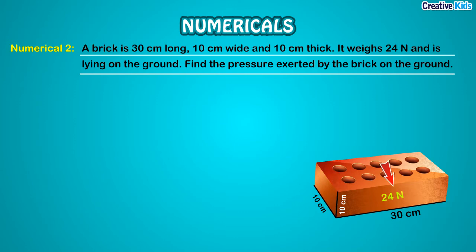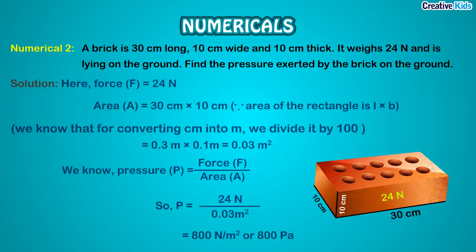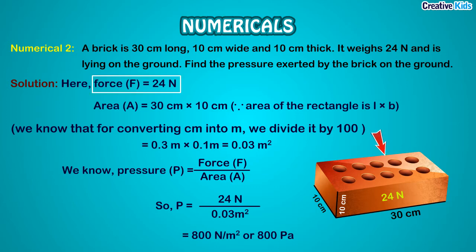The brick weighs 24 N and is lying on the ground. Find the pressure exerted by the brick on the ground. What is given: the brick applies a force of 24 N. The area of contact of the brick is given by the area of a rectangle — length × breadth. Length is 30 cm and breadth is 10 cm.